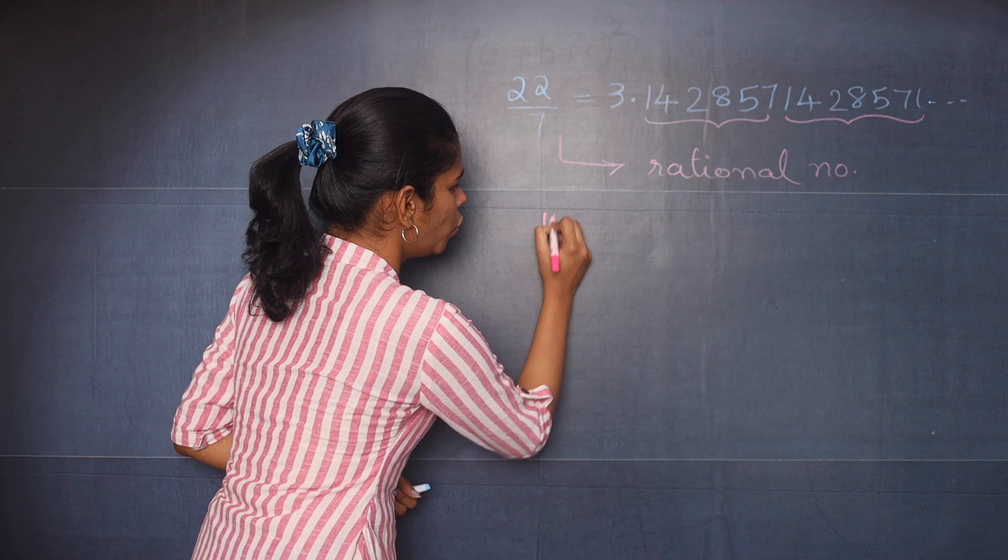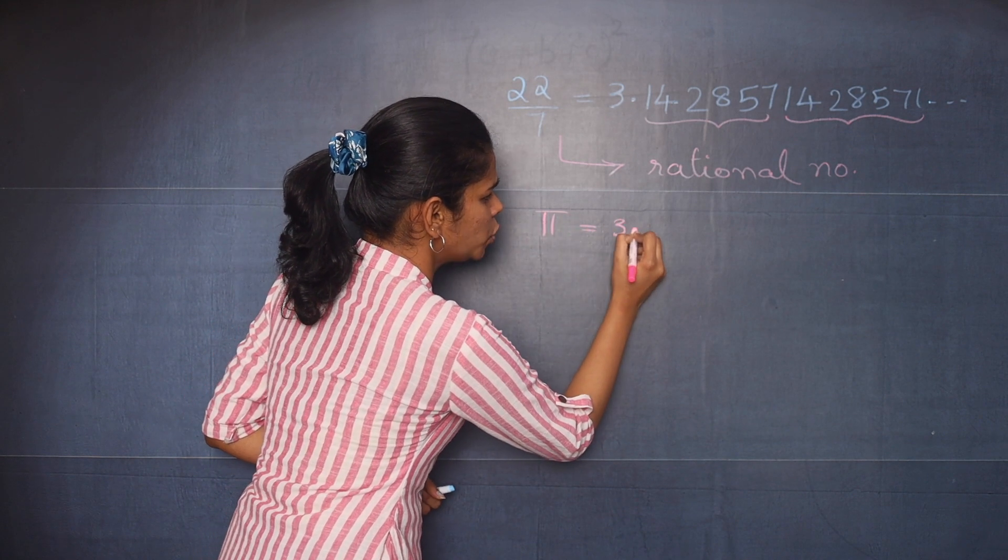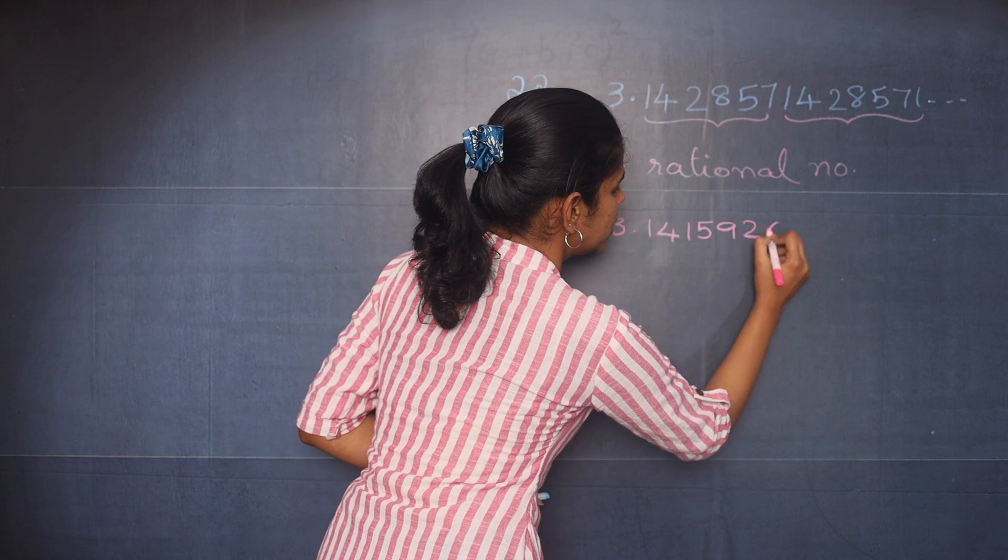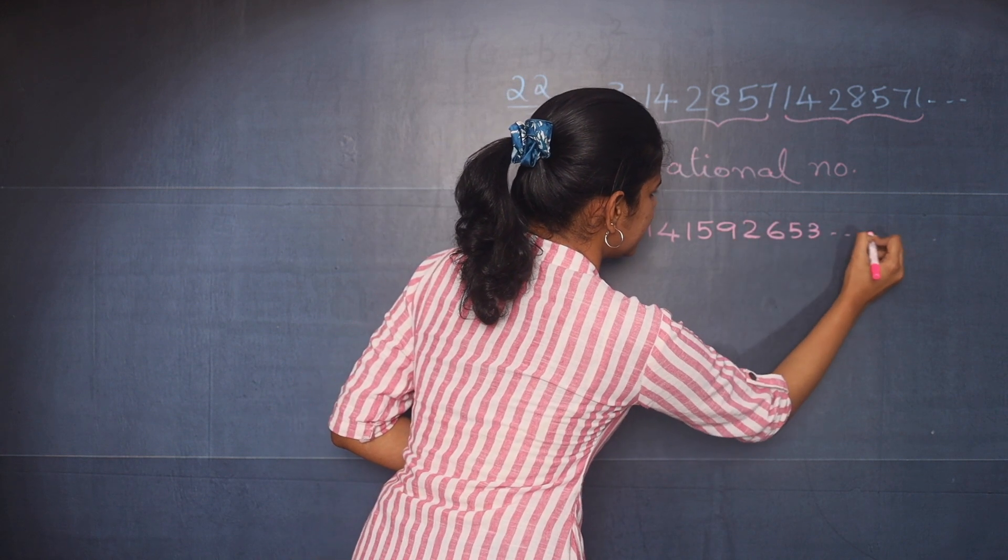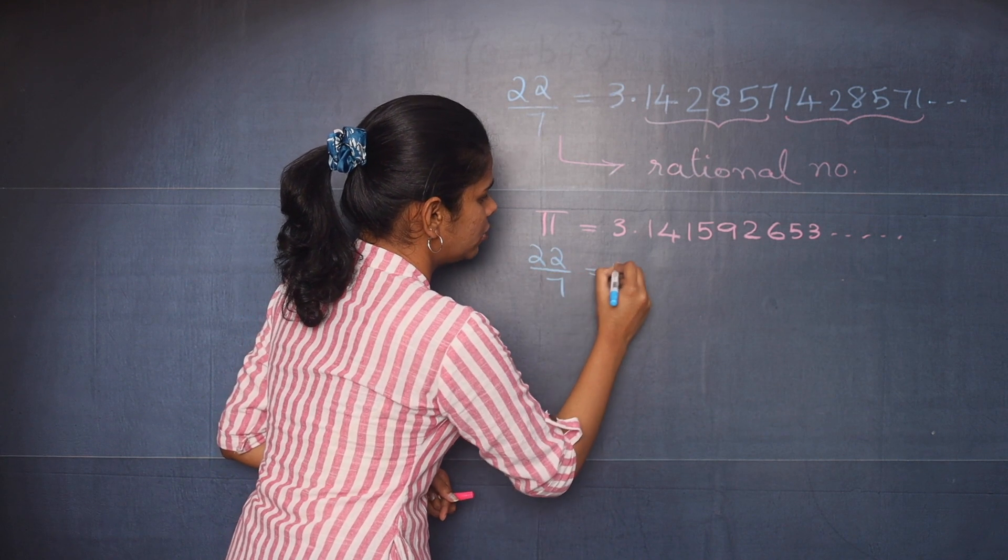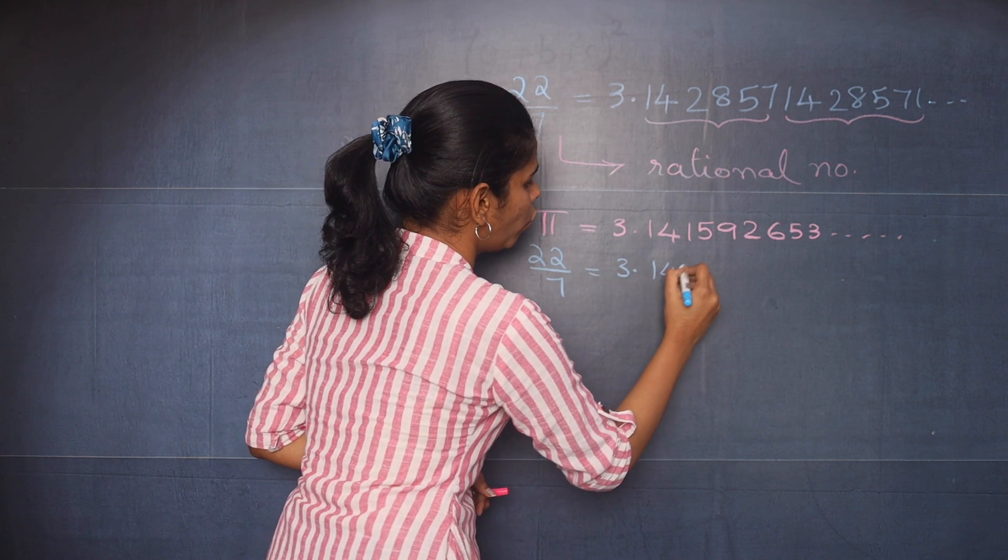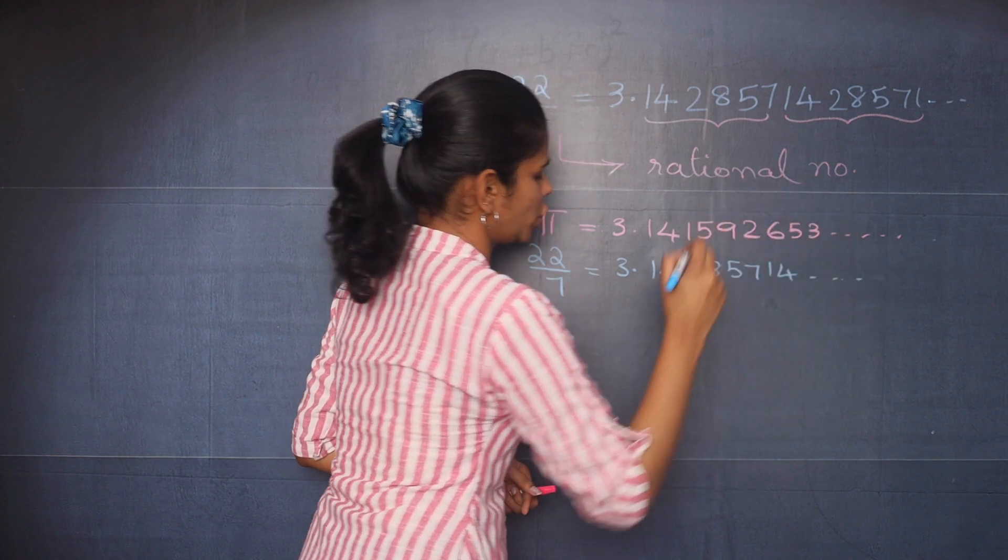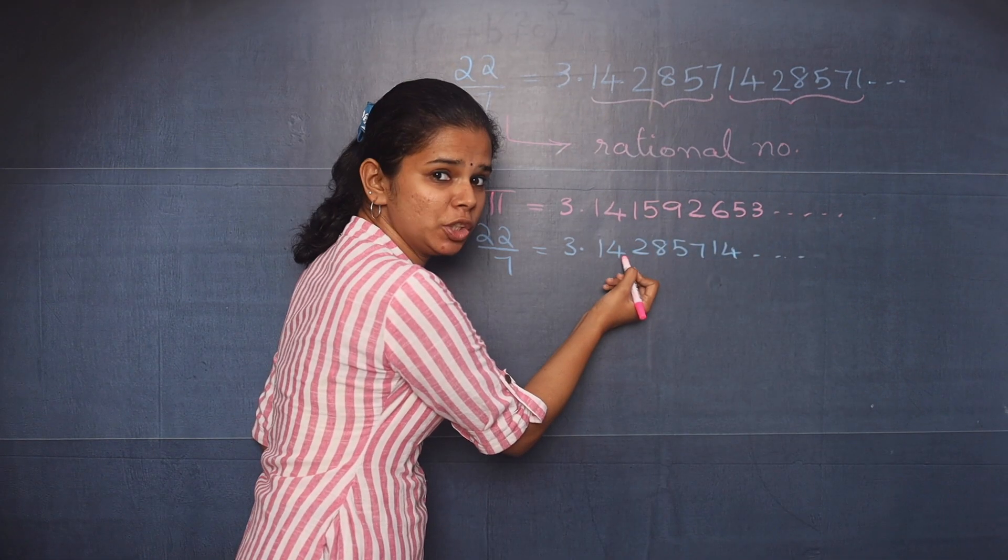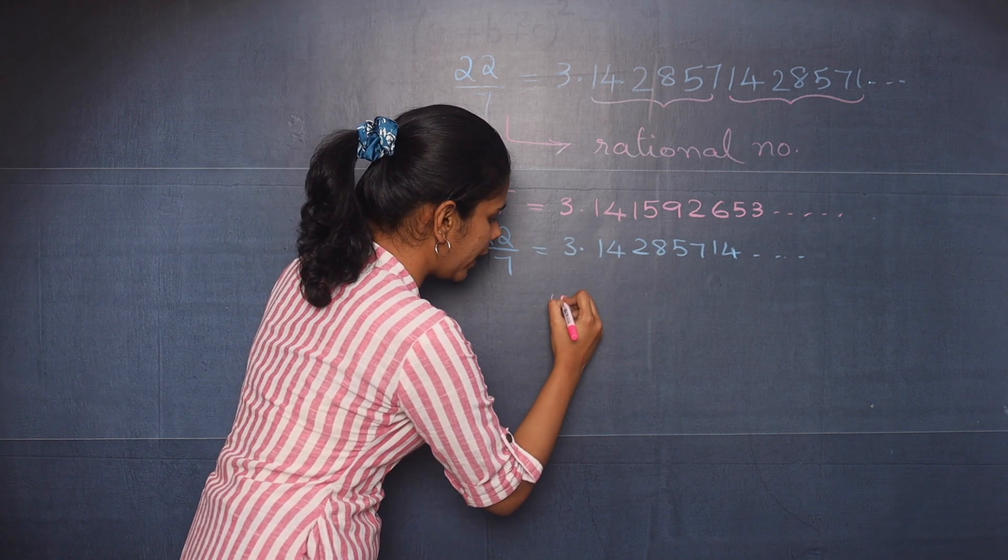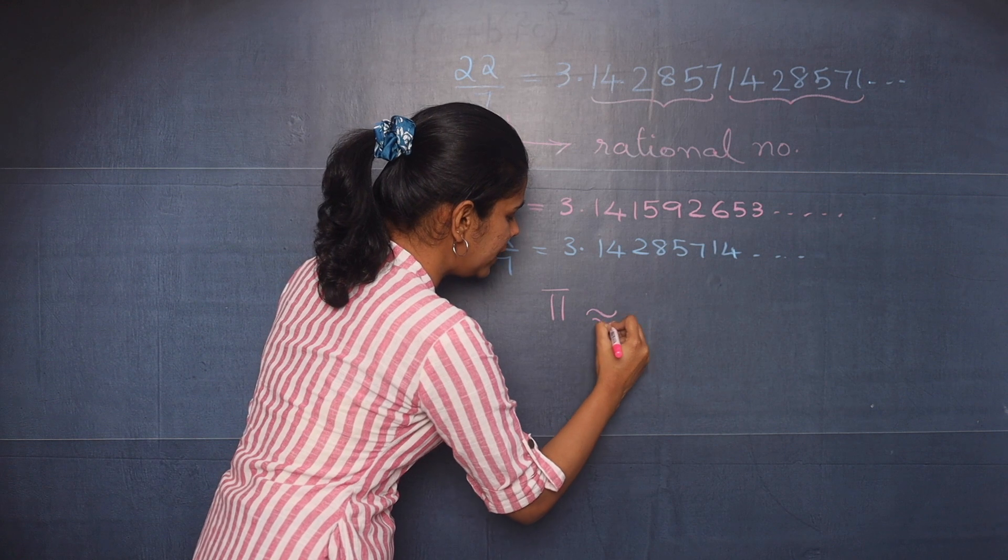Pi is equal to 3.141592653... and so on. You know the value of 22 by 7 as 3.14285714... You can see till the digit 4 all the numbers are the same. So you can conclude that pi is approximately equal to 22 by 7, which is approximately equal to 3.14.